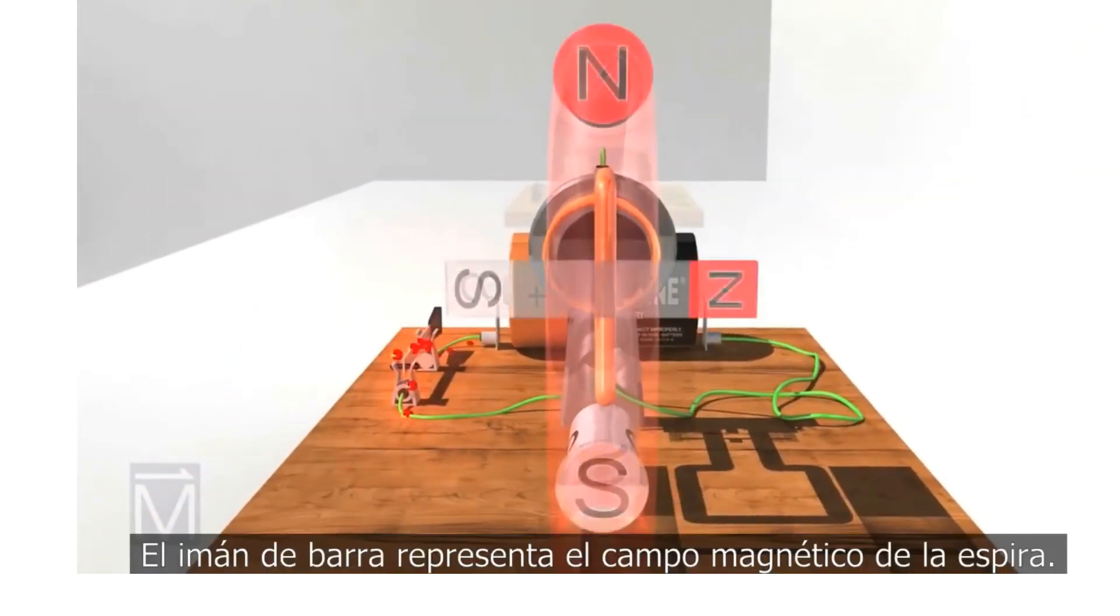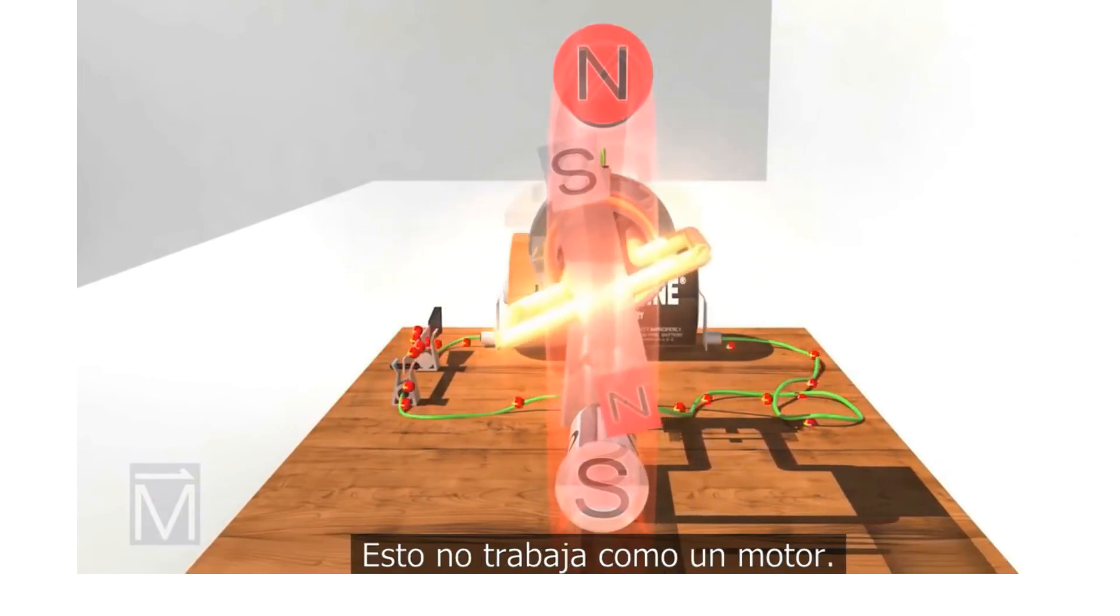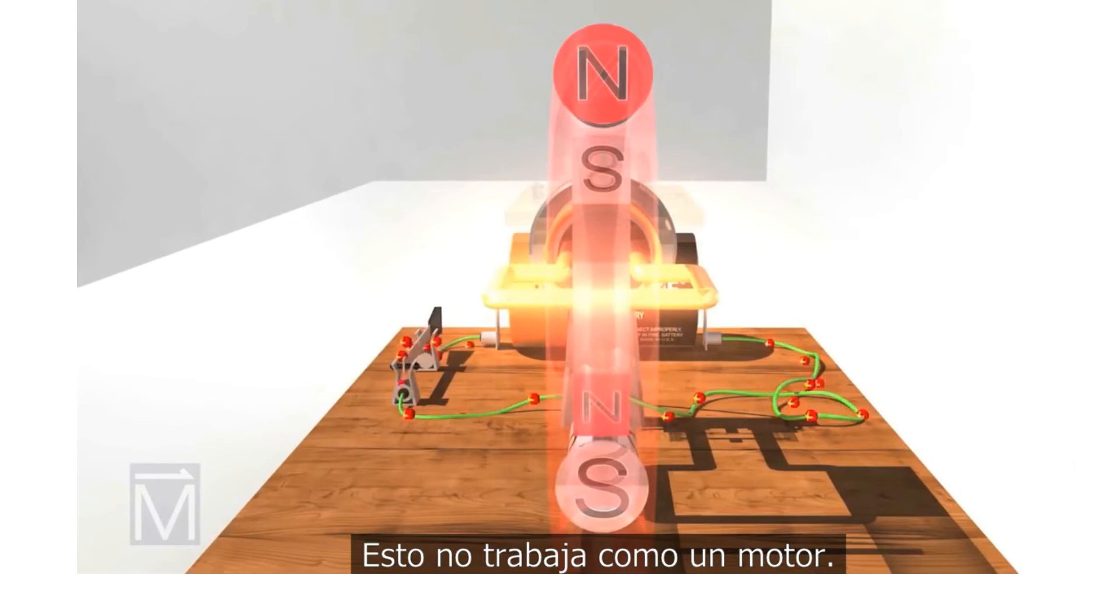The bar magnet again represents the magnetic field generated in the coil. As you see, this is still not much of a motor.